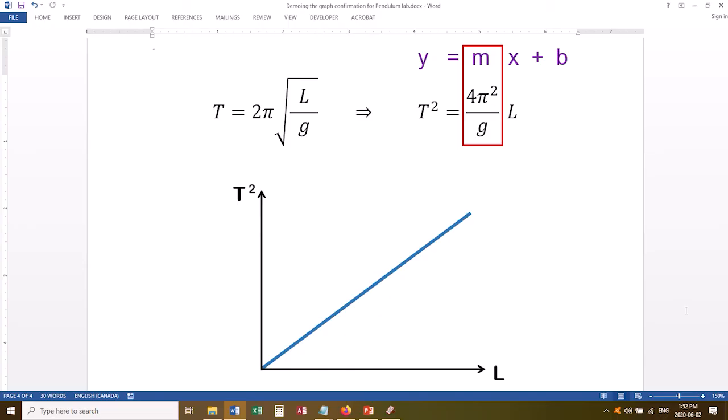You can check that your slope is equal to 4π² over g, but in this experiment, they actually do want you to find the value of g. So it's equivalent to actually calculate g and then check whether it equals the accepted value of 9.81 meters per second squared.